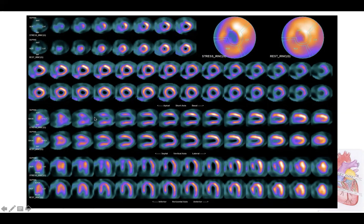It is very simple, because if you observe this area versus this area, you can see that there is a large amount of perfusion abnormalities in the apex, in the anterodistal portion of the anterior wall, and also in the medium and distal portion of the septal wall.